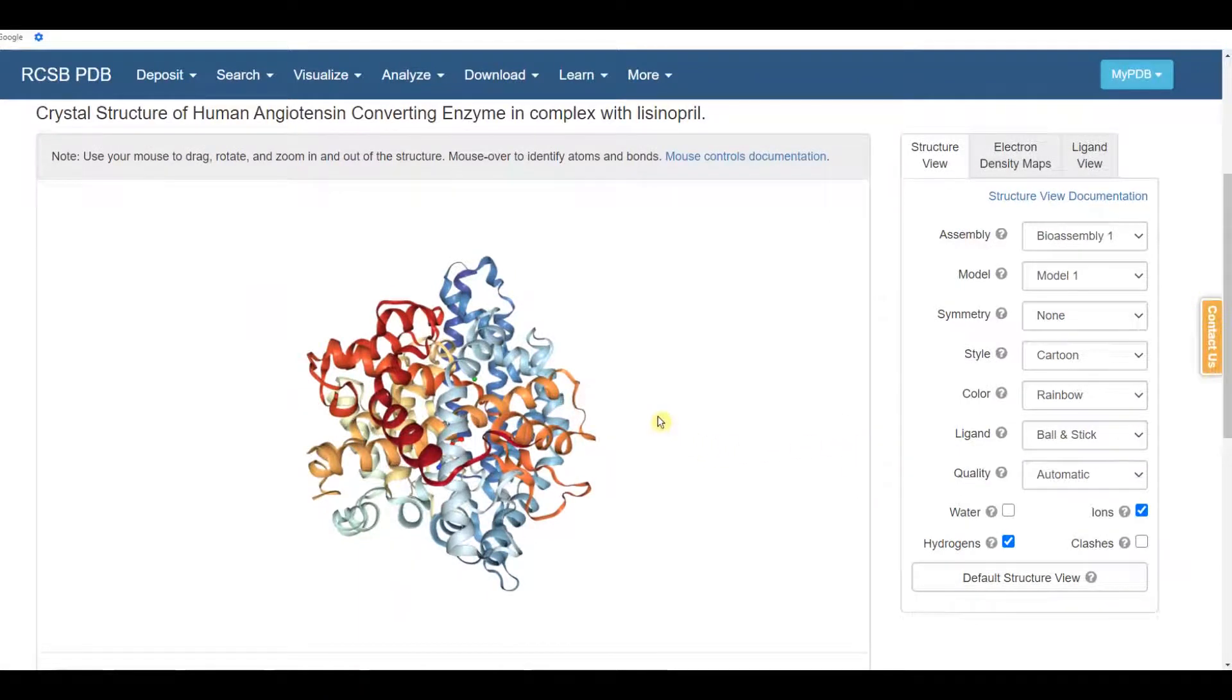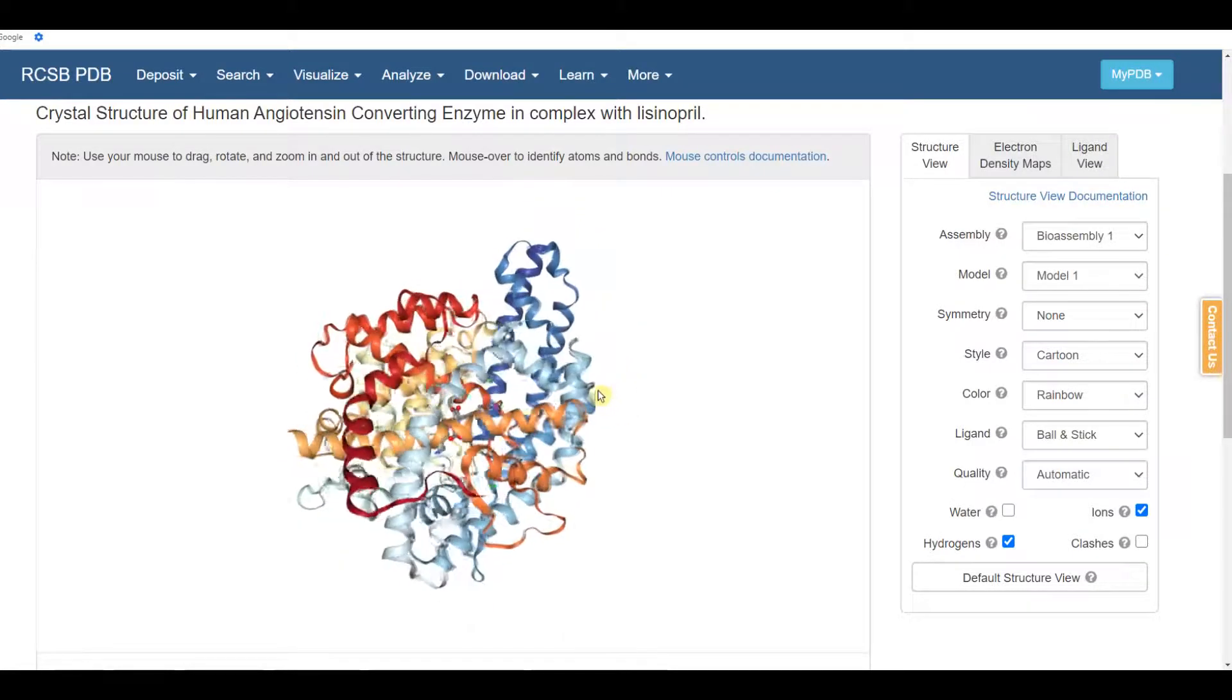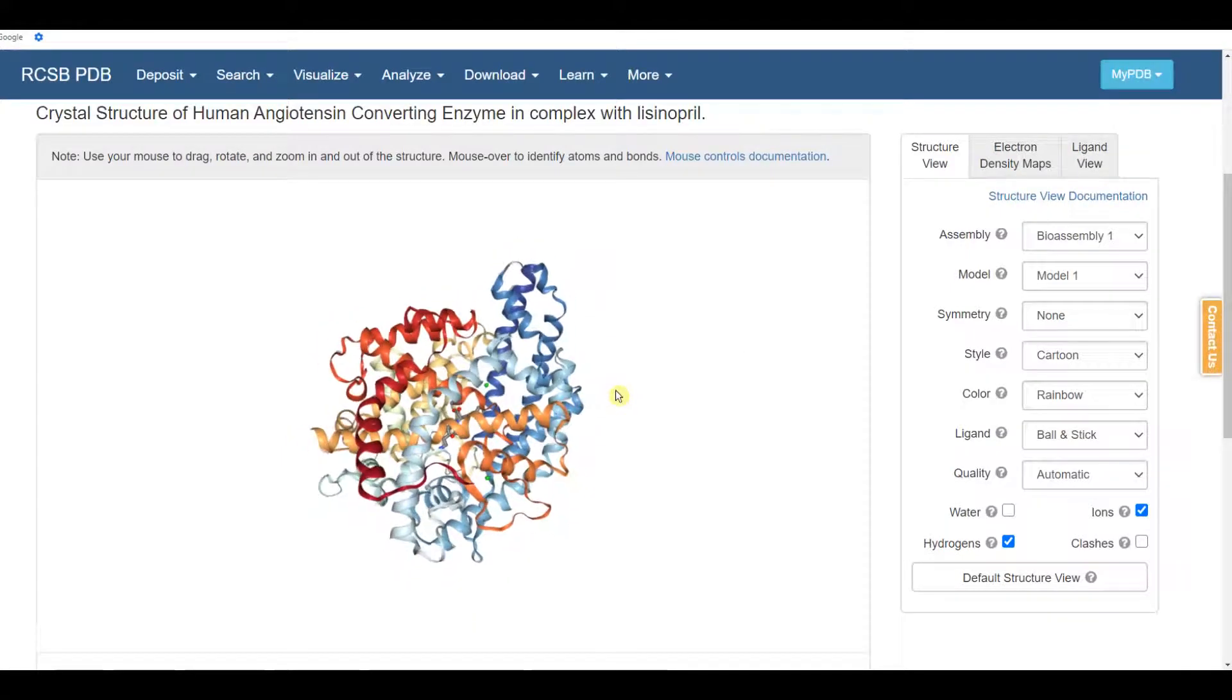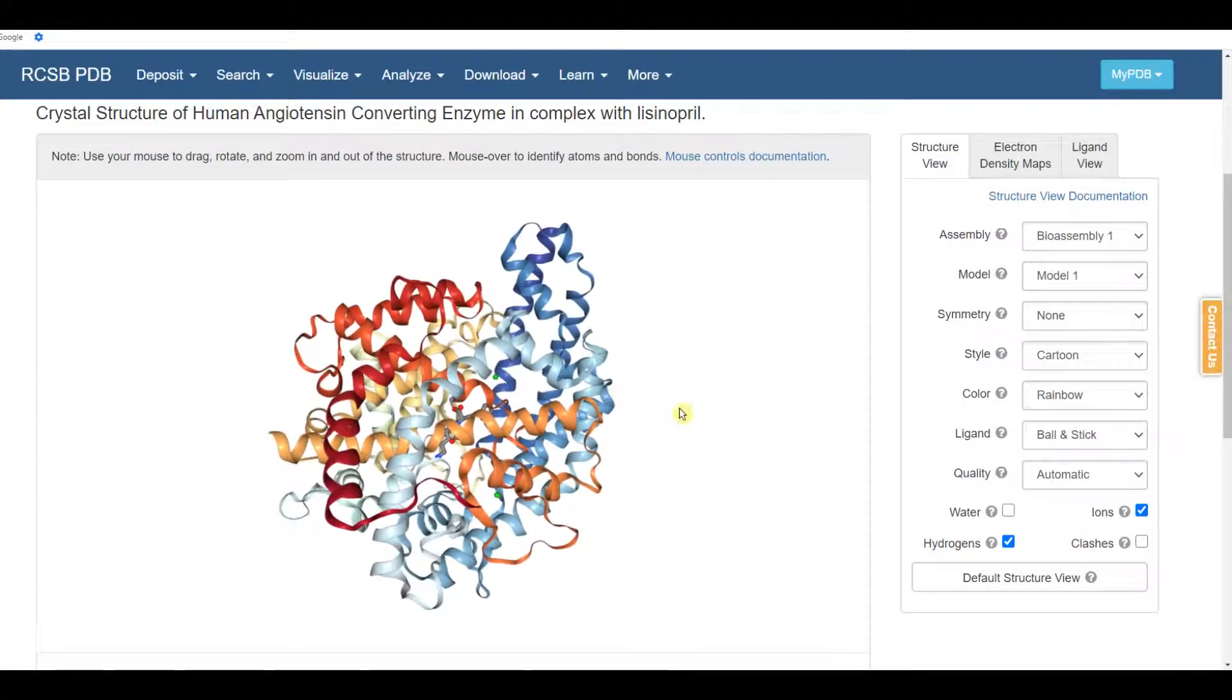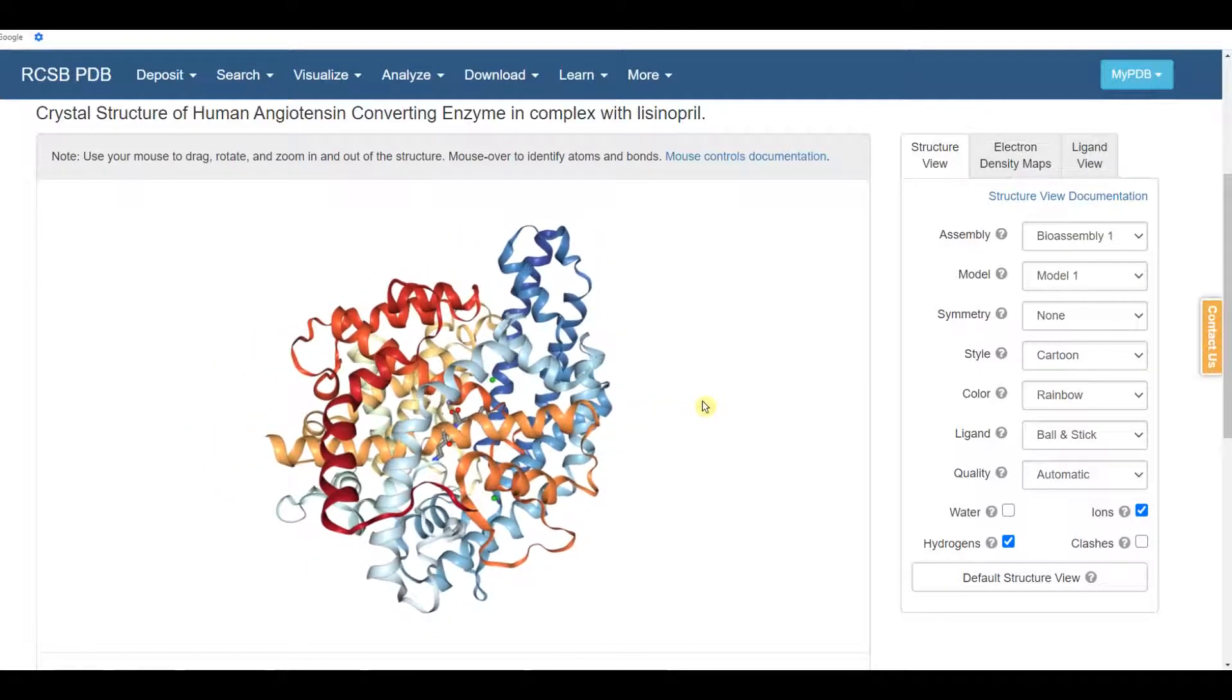Here is our cartoon form for this protein. We can click and drag with the left mouse button and rotate the structure. We can zoom in and out with the mouse wheel, and if we right click and drag, we can transpose the structure in the window.